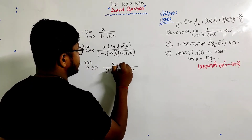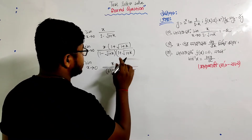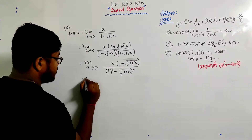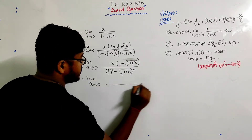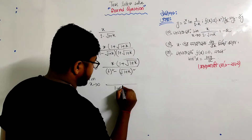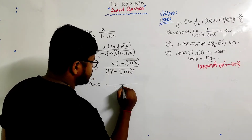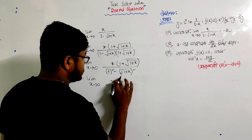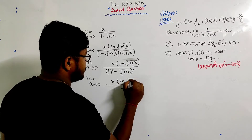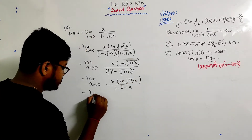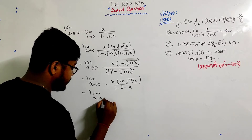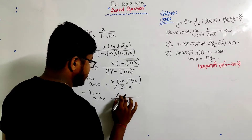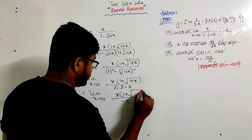We show that the numerator becomes 1 minus (1 plus x), which simplifies to minus x. The denominator becomes x into 1 plus root of 1 plus x. So the limit x tends to 0 gives us x over x into 1 plus root of 1 plus x.